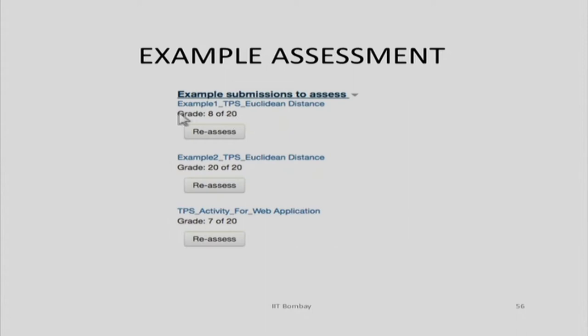The instructor has actually gone through the activity and the rubric to find appropriate rubric levels it corresponds to. Your grade should be somewhere close to that score. Examples 1 and 3 are poor TPS examples — individually they may have some good elements — whereas Example 2, the Euclidean distance TPS, is the best example according to the instructor. Try to ensure your assessments are close to the instructor's assessment.